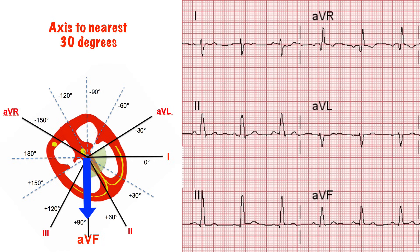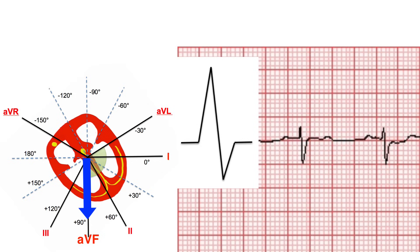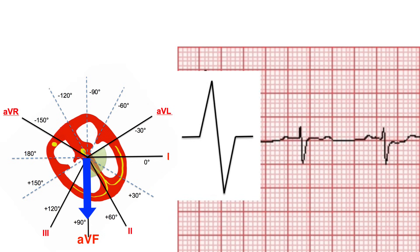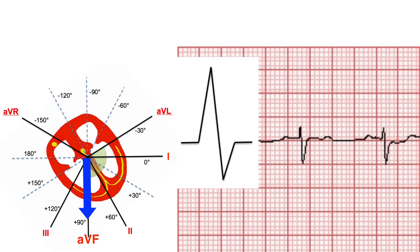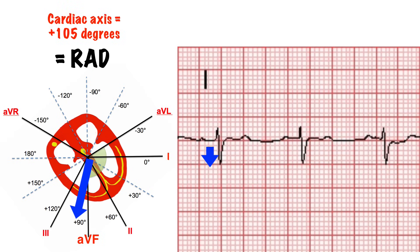This gives us the axis to the nearest 30 degrees, which is fine if the axis is grossly normal or grossly abnormal. But if it's near the limits, like this, we need to be a bit more accurate. Go back to the equiphasic lead — is it truly equiphasic, equally positive and negative, or is it slightly more positive or slightly more negative? If it's truly equiphasic, then you've found your axis. If it's slightly more positive, you can shift the axis by 15 degrees towards the equiphasic lead. In this case it's slightly more negative, therefore you can shift the axis by 15 degrees away from the equiphasic lead. This patient has right axis deviation.